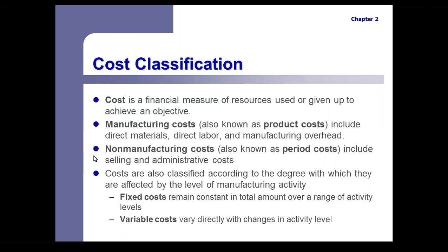Non-manufacturing costs, also known as period costs, are those costs incurred either after the product is complete — like selling costs — or they're company-wide administrative costs, sometimes called administrative overhead costs. For example, the accounting department is not involved with making a product, or the president's salary — the president is not directly in the process of making the product.